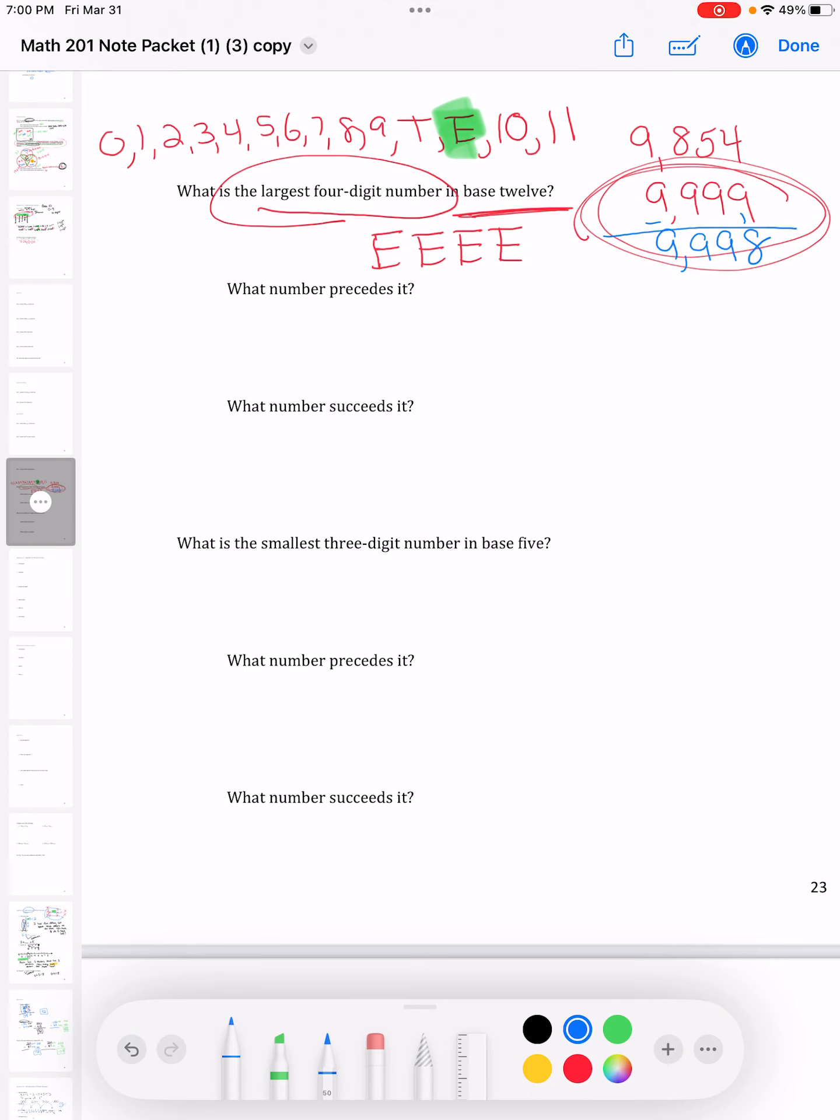So the number that comes before E is T. The number that comes before 11 is 10. Notice only the ones place changed. Everything else stayed the same. Precedes means what comes before. Succeeds means what comes after. I'll write that up: after and before.